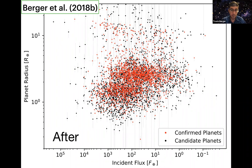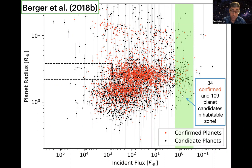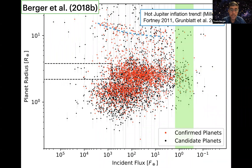What you'll notice is two separate distributions of planets: super-Earths down below are separated from the sub-Neptunes up above — this is where we see the planet radius gap. With Gaia DR2, we can also update the census of planets within the habitable zone: 34 confirmed and 109 planet candidates. These numbers are slightly smaller than before due to the systematic shift in the diagram. There's also a clear hot Jupiter inflation trend for more massive planets, which are massive enough to hold onto their atmospheres at high incident fluxes.